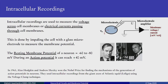Let us consider intracellular recordings. Typically you have a cell and a glass microelectrode that impales the cell. Between inside and outside you record the potential. The microelectrode is connected through silver-silver chloride wires to a microelectrode amplifier, and then to signal conditioning circuits which record the voltage or the currents. When you insert the electrode inside the cell, you get a potential — typically minus 60 to minus 80 millivolts with respect to the outside.